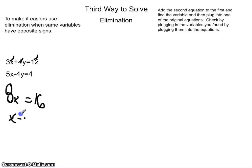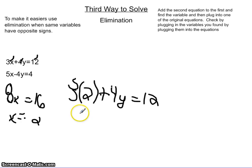And then you would plug the x into one of the equations and I'm going to choose the first one. So it would be 3 times 2 plus 4y equals 12. So that would be 6 plus 4y equals 12.